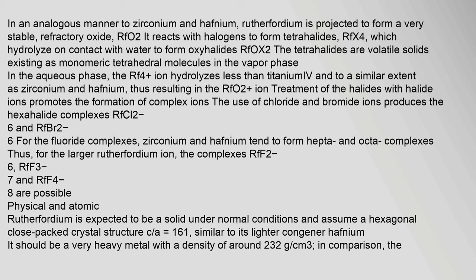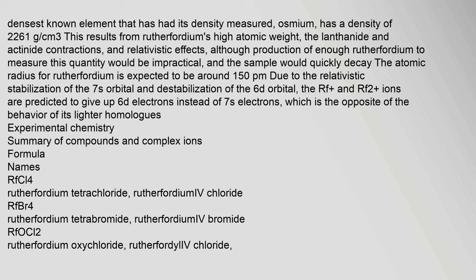The tetrahalides are volatile solids existing as monomeric tetrahedral molecules in the vapor phase. In the aqueous phase, the Rf⁴⁺ ion hydrolyzes less than Ti⁴⁺ and to a similar extent as zirconium and hafnium, resulting in the RfO²⁺ ion. Treatment of the halides with halide ions promotes the formation of complex ions. The use of chloride and bromide ions produces the hexahalide complexes RfCl₆²⁻ and RfBr₆²⁻. For fluoride complexes, zirconium and hafnium tend to form hepta- and octa-complexes; thus for the larger rutherfordium ion, the complexes RfF₆²⁻, RfF₇³⁻, and RfF₈⁴⁻ are possible.